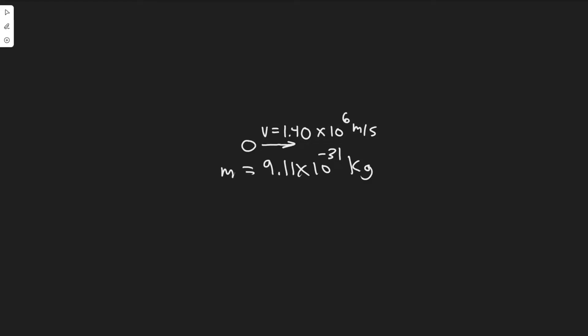So in this problem, we're told how much work is required to stop an electron with mass equals 9.11 times 10 to the minus 31 kg, which is moving with a speed of 1.4 times 10 to the 6 meters per second.